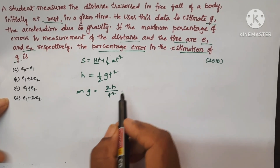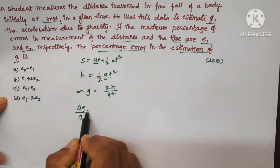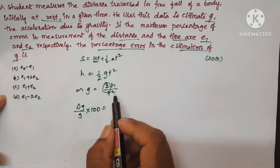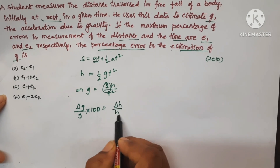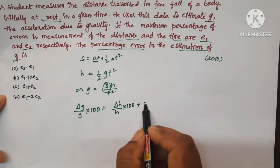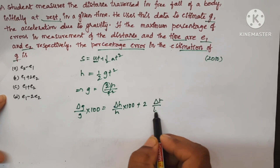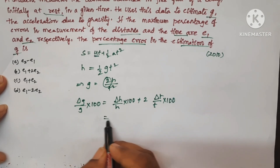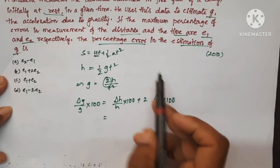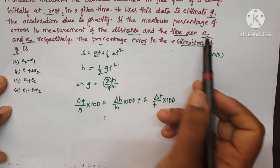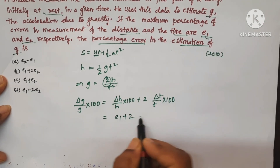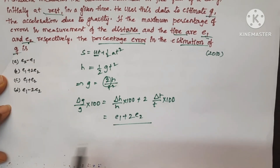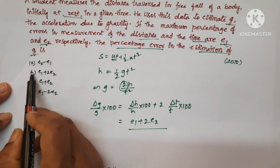The percentage error: (ΔG/G) × 100 = (ΔH/H) × 100 + 2 × (ΔT/T) × 100. No need to write the constant. Since distance error is E1 and time error is E2, this gives: percentage error in G = E1 + 2E2. So option B is the correct answer.